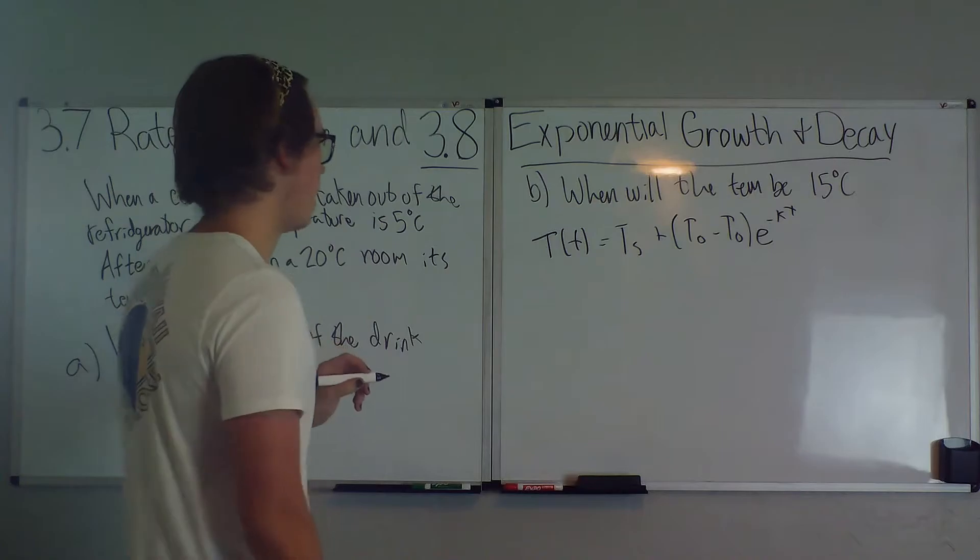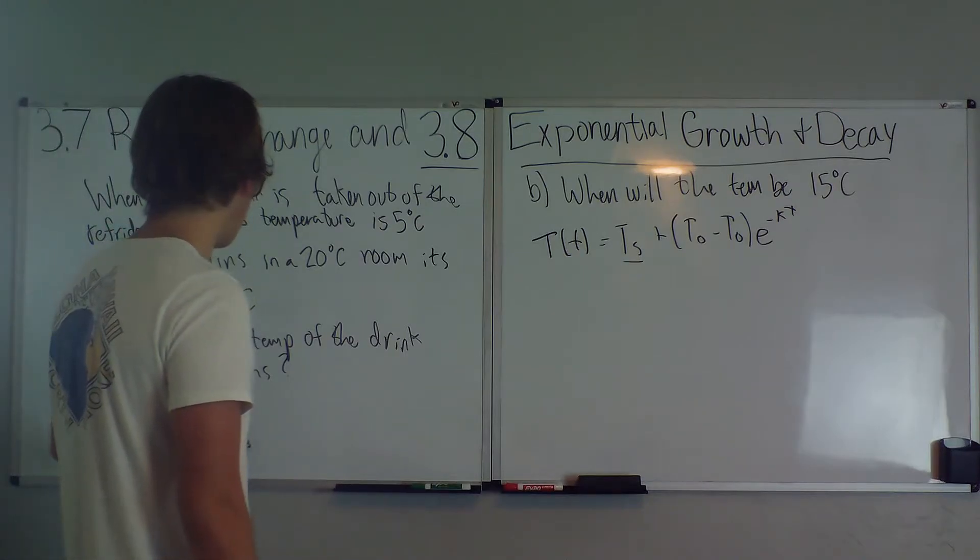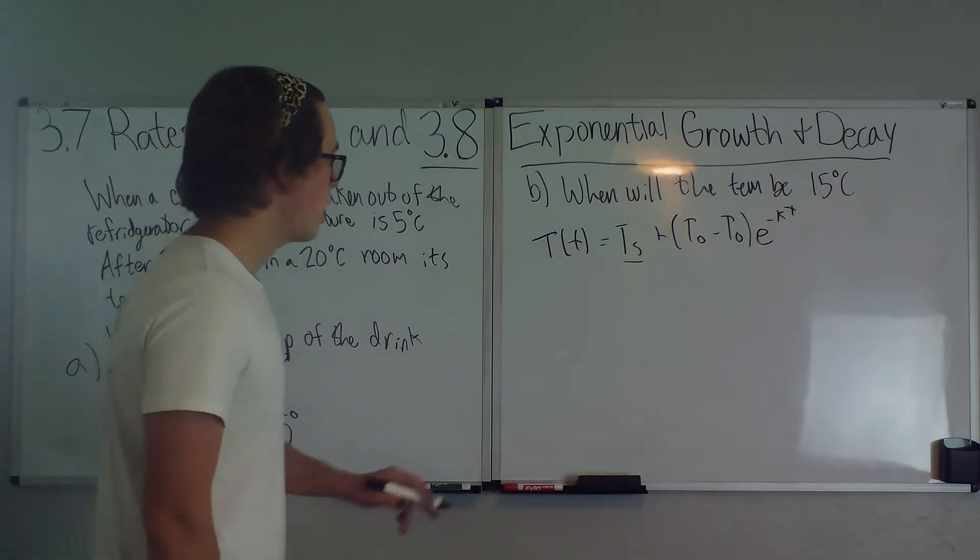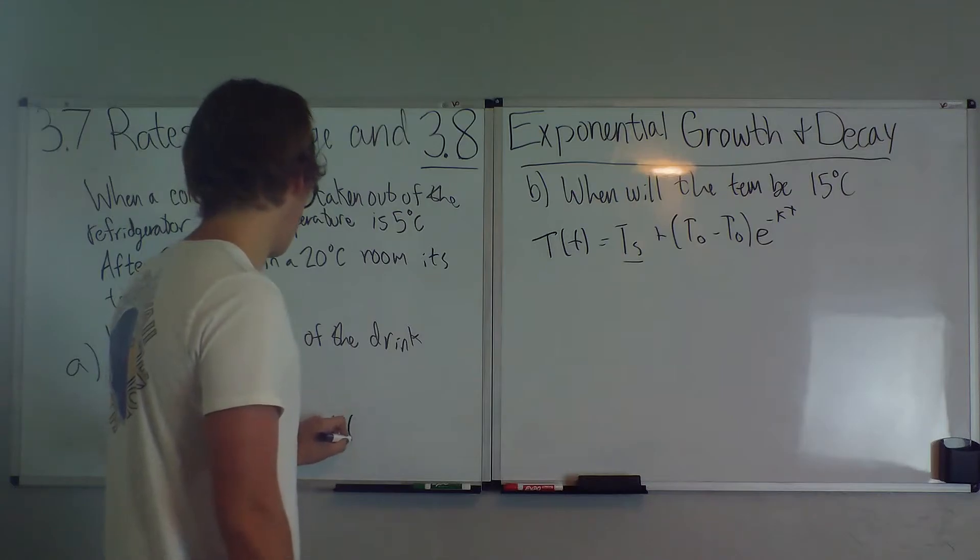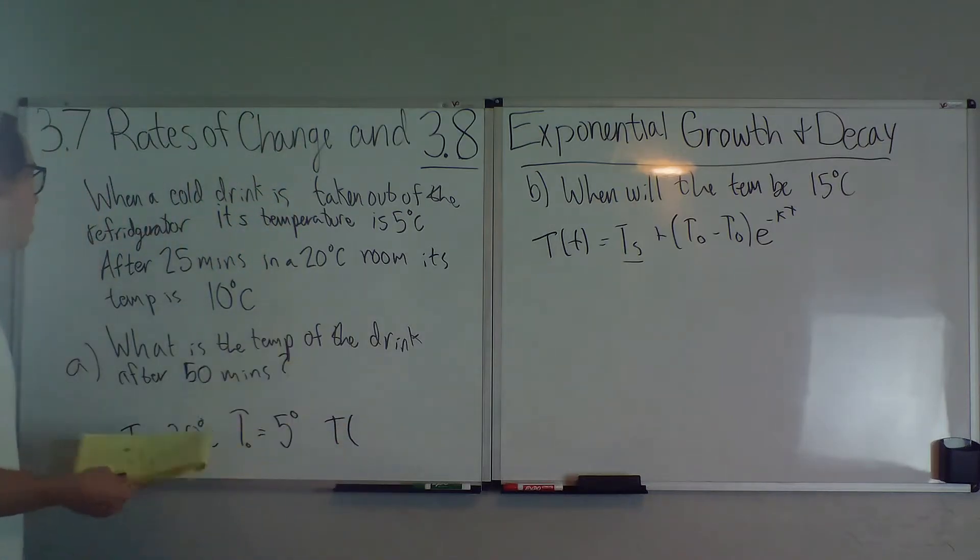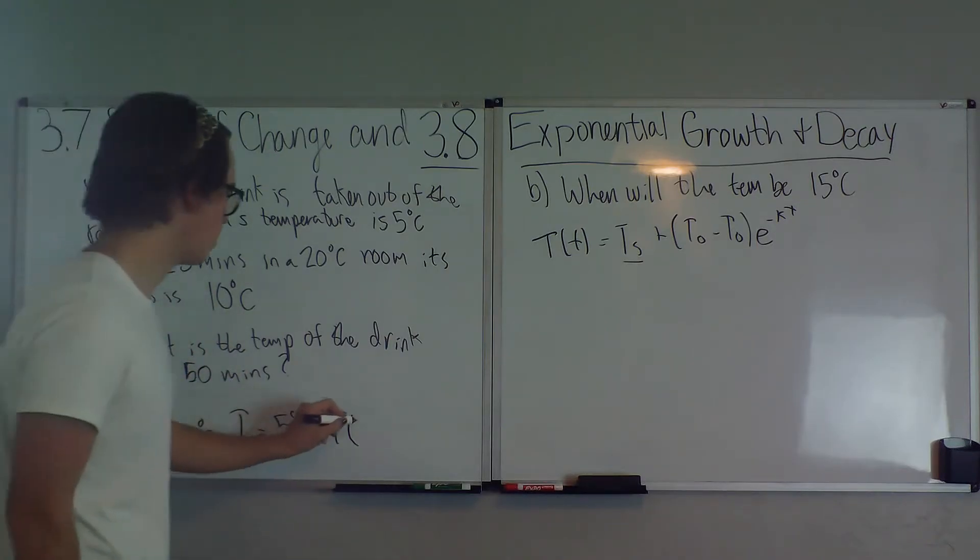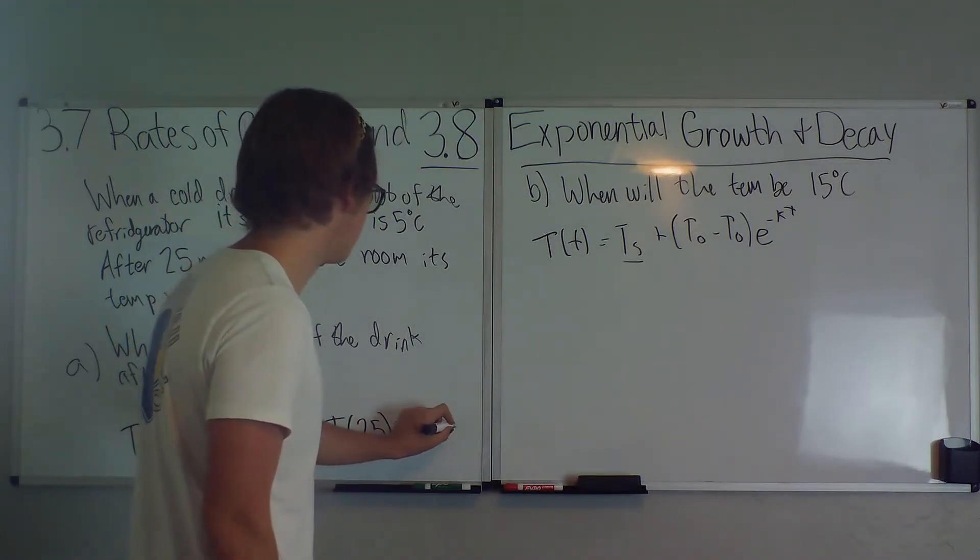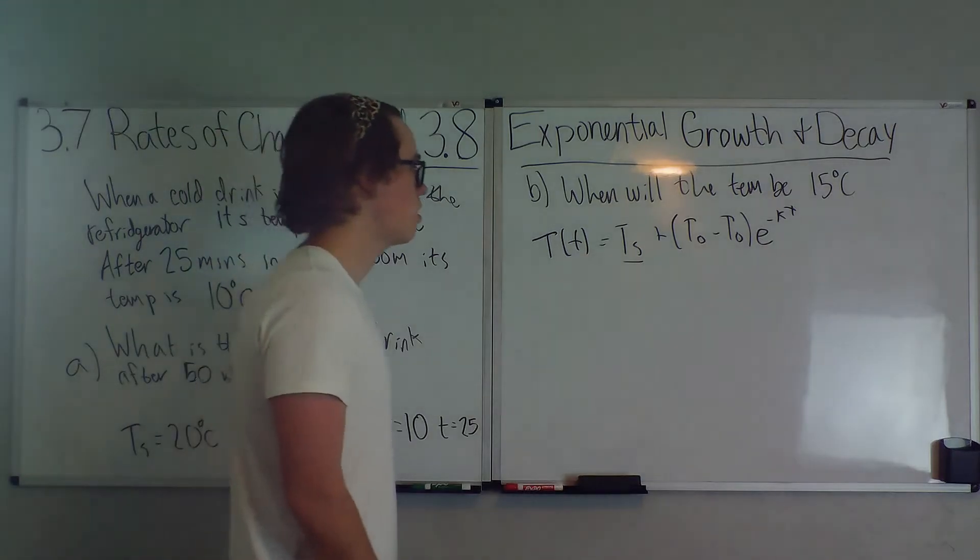So what do we have? We have our TS. TS is the surrounding temperature. That equals 20 degrees Celsius. We have our T0, which is our original temperature, our starting temperature, which is five degrees Celsius. We have our E, because we know what that is. And we have our time. And then what it says is, after 25 minutes, so we have our time. It says, after 25 minutes, it is 10 degrees Celsius. So T of 25 equals 10. And t, small t equals 25.